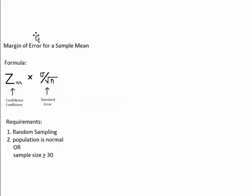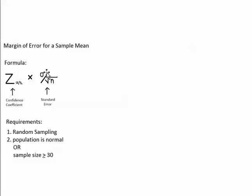Before we calculate the margin of error for a sample mean, let's look at the formula. We'll need the confidence coefficient, represented by the letter Z with a subscript alpha divided by 2. This is just a notation. The standard error uses the population standard deviation sigma and the sample size n — the short version of the formula used when sampling from a large population.